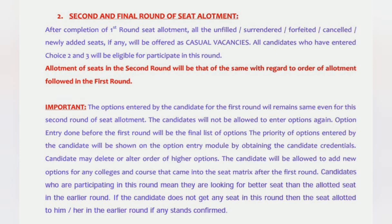An important guideline: whatever option entries you made in the previous round, the same options will be available for round two. What you can do extra is change the priority or order of options. You can delete or alter higher-order options — meaning any option above your current allotment can be deleted, altered, or reordered. However, you are not allowed to add any new college.